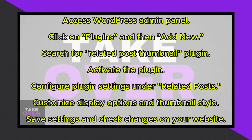Click on Plugins, then Add New. A panel of plugins will appear, categorized as Featured, Popular, Recommended, and Favorites. You can also search for plugins by keywords. In the search bar at the top right corner, type in Related Post Thumbnail.